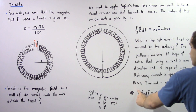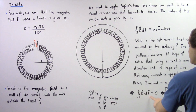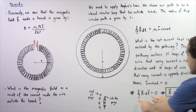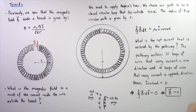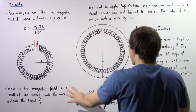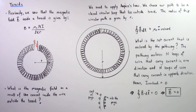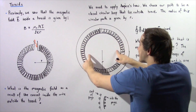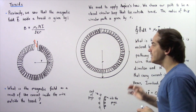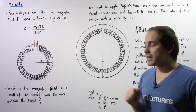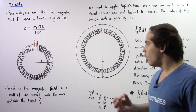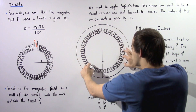Since the enclosed current is zero, the closed integral of B·dL equals zero, which implies B equals zero. So in the region outside our toroid, B is zero. The same result applies if we choose our path to lie in the inner hollow region — any path there encloses zero net current, so the magnetic field there is also zero. We only have a magnetic field inside the toroid itself.